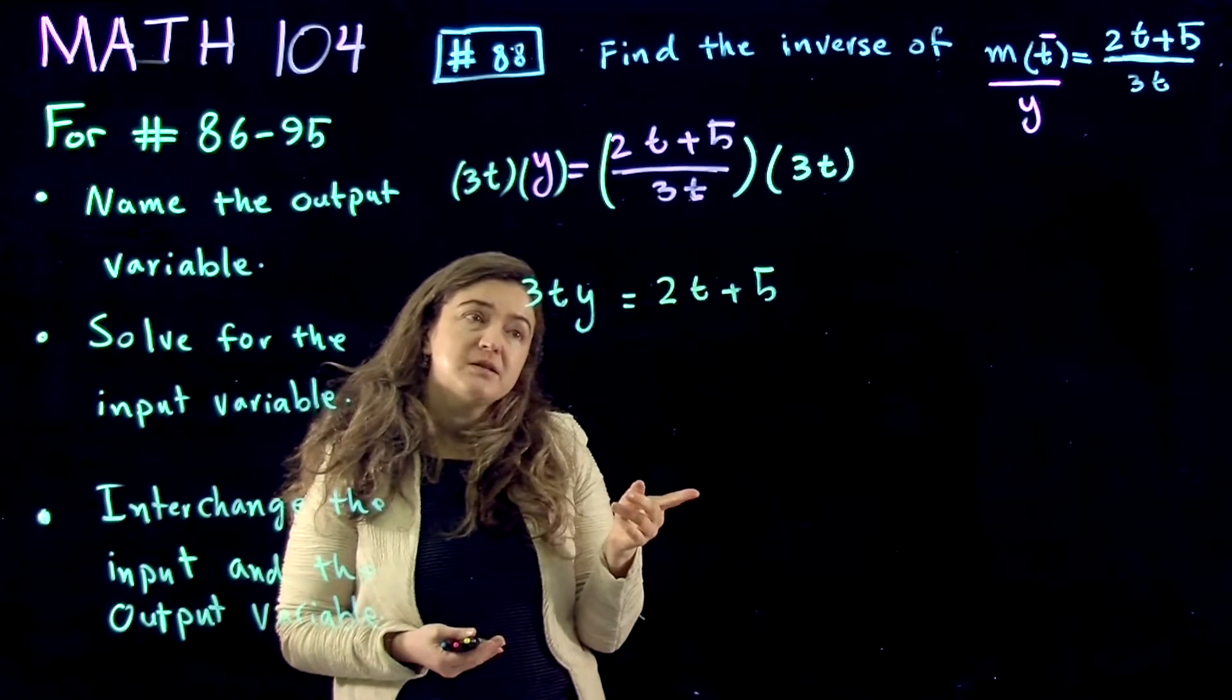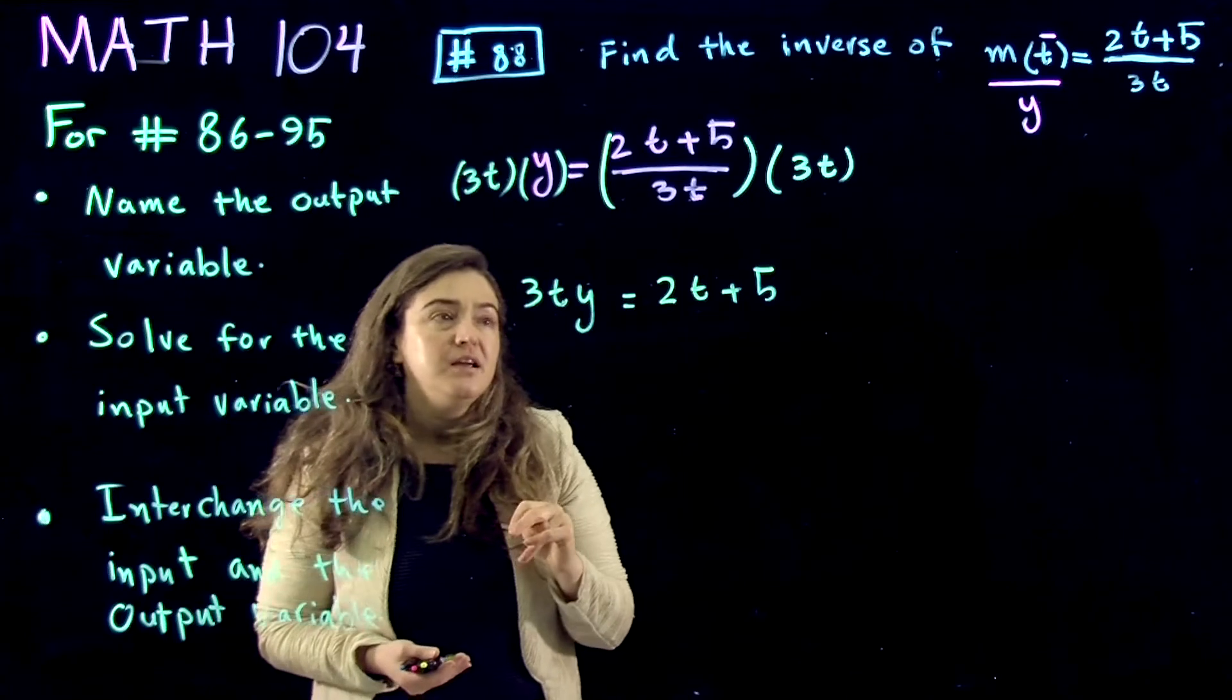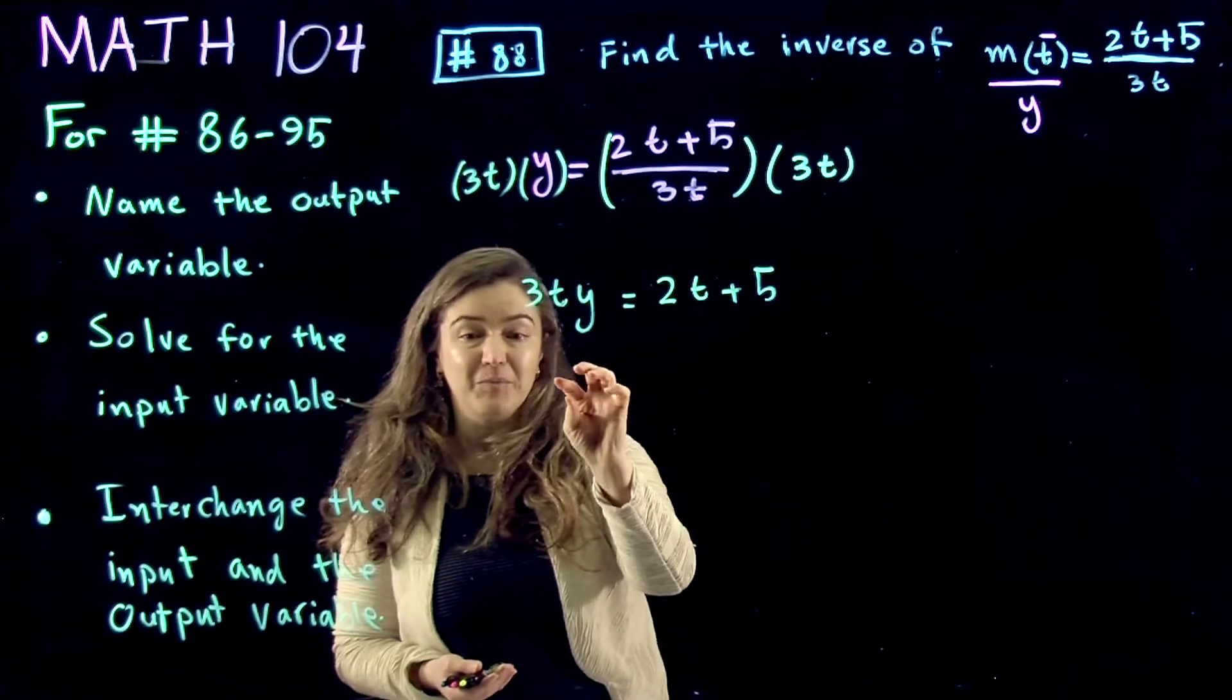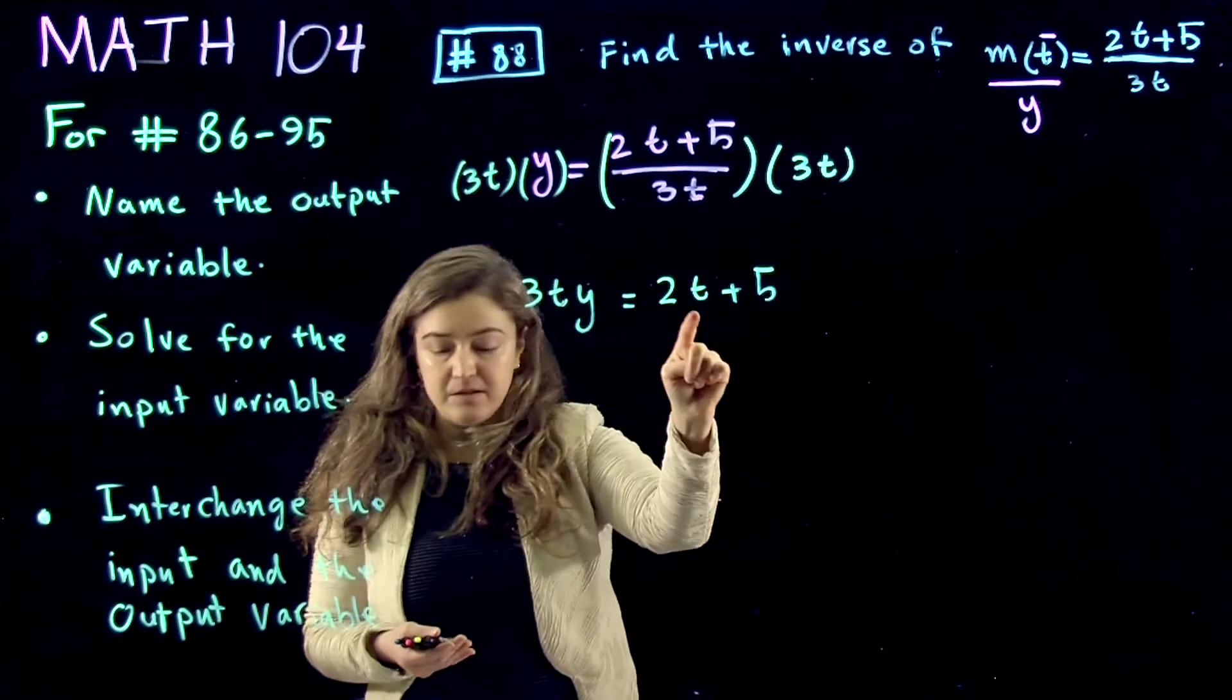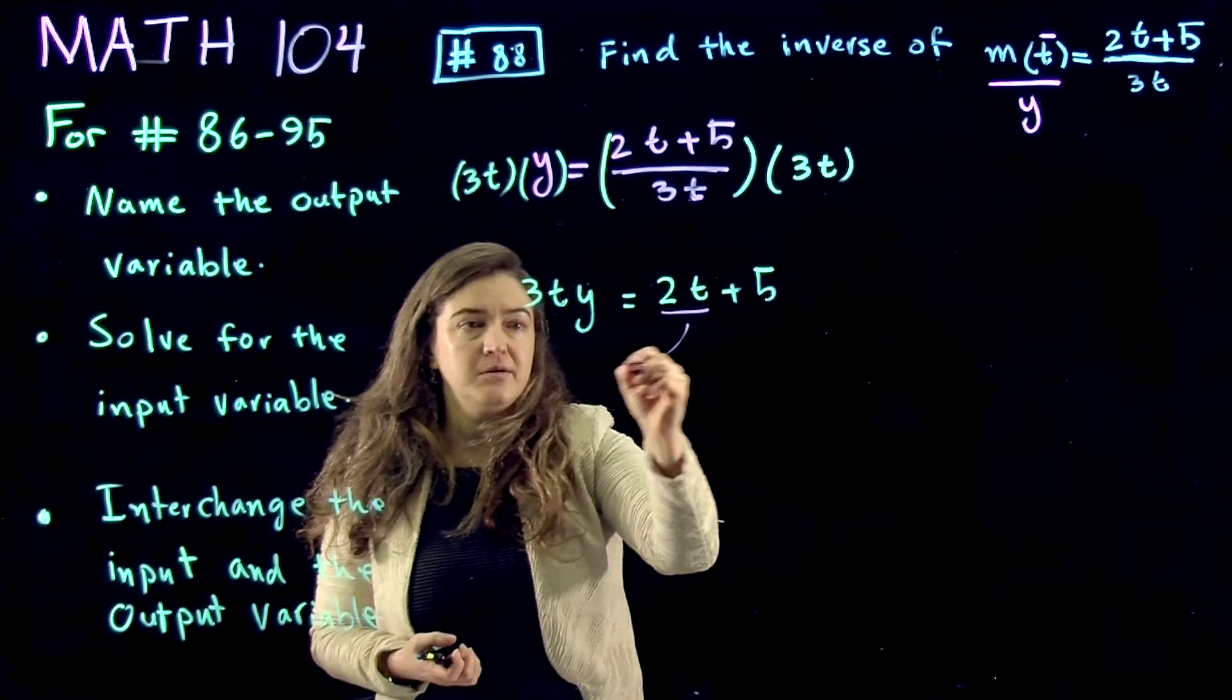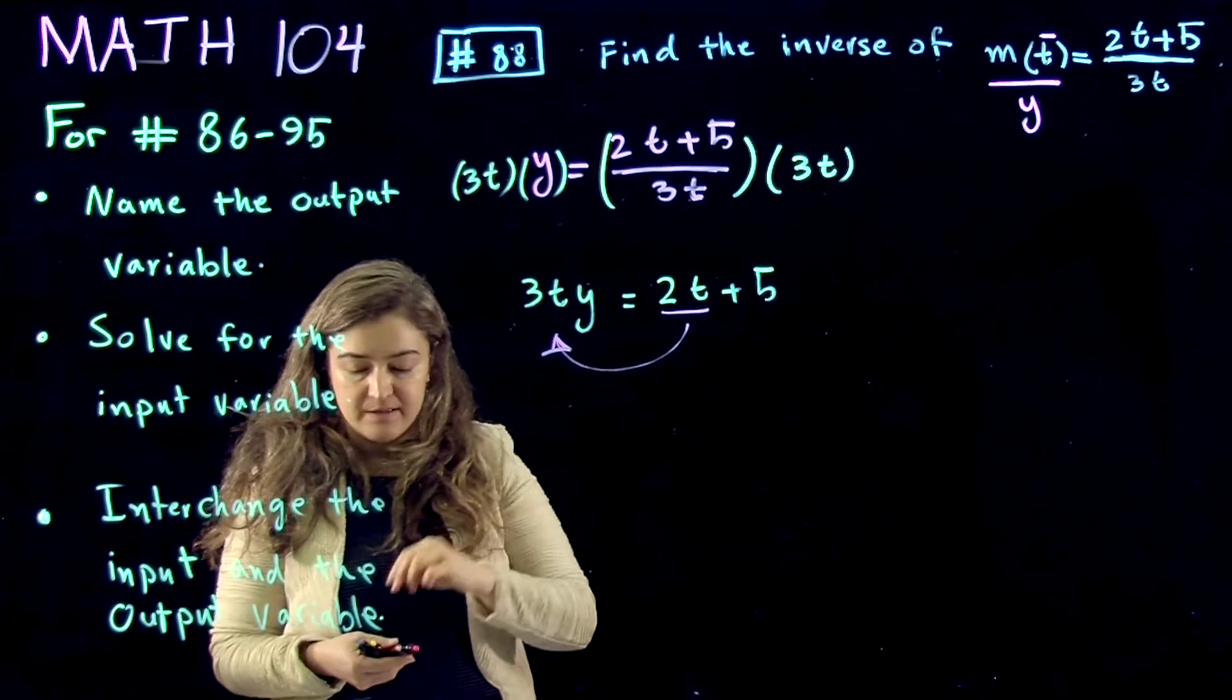Now, what am I solving for? Independent variable t. And so what I want to do is isolate every term with t by itself on one side. To do that, I have to take this term to the other side, that is subtract 2t from both sides.